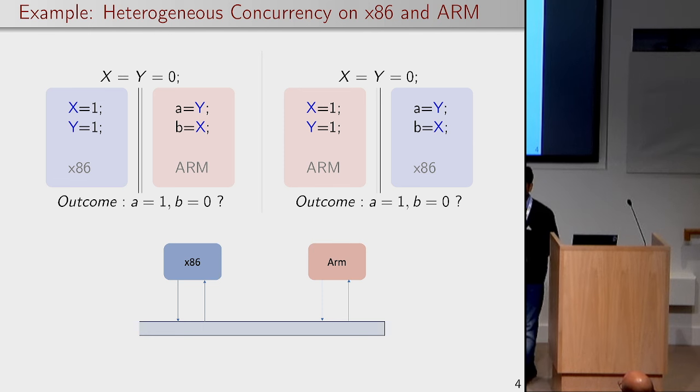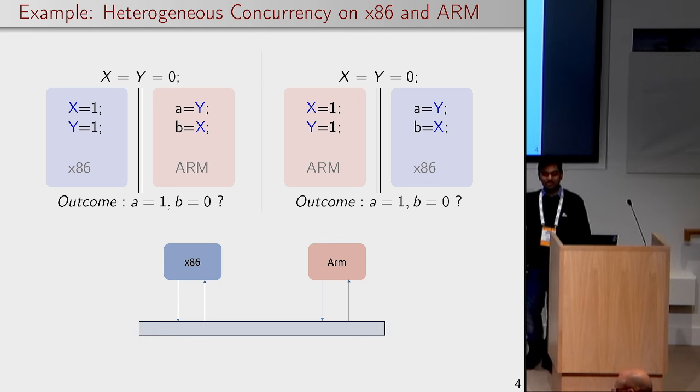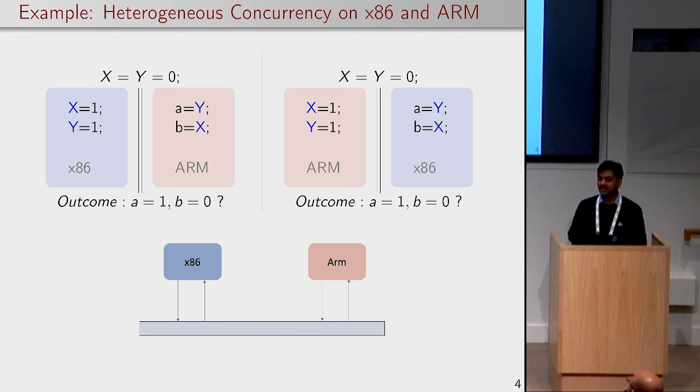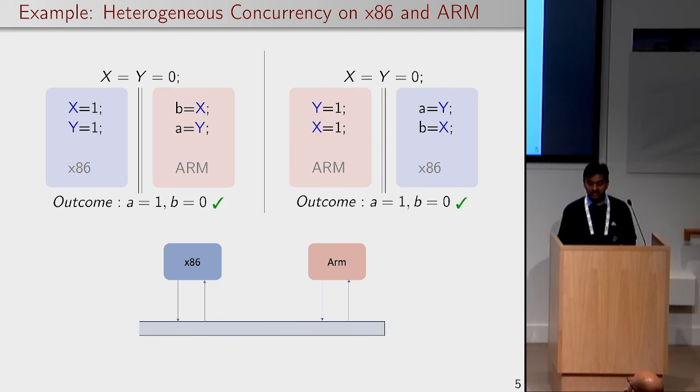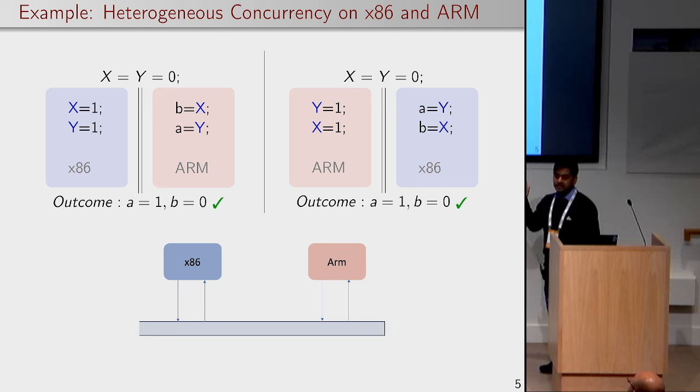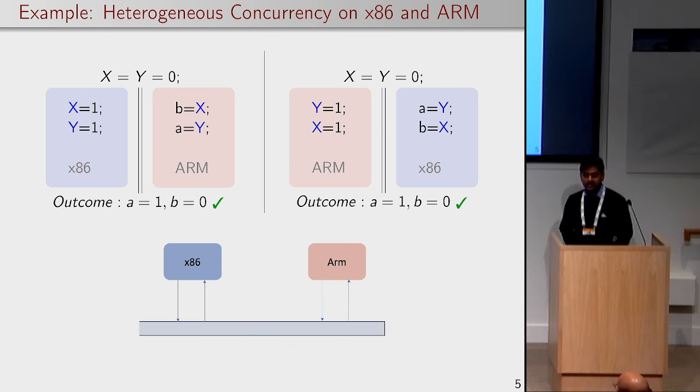I assume that since the two processors don't synchronize with each other it's going to be worse than either of their individual models, so this will be possible. That's a good explanation. We only need one of them to get disordered. Exactly. If we consider the ARM processor it allows the reordering of the write-write or read-read pairs and because of this reordering we can come up with an interleaving execution where this behaviour is possible.